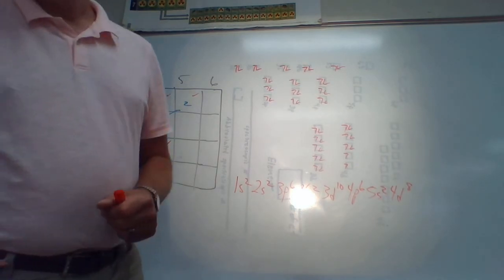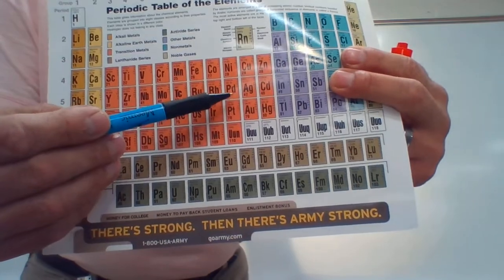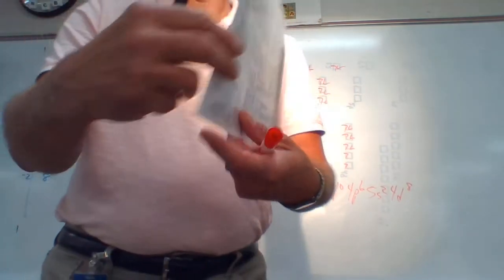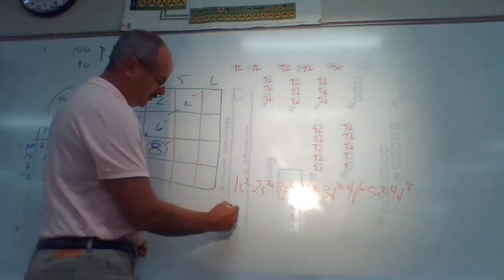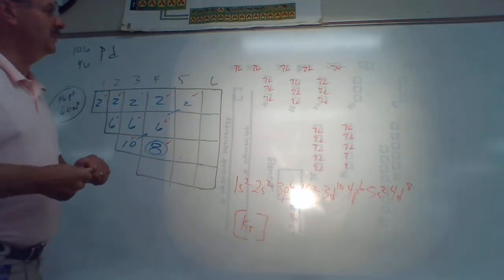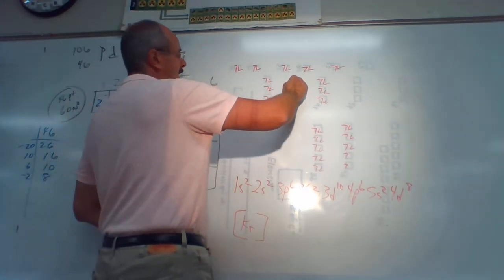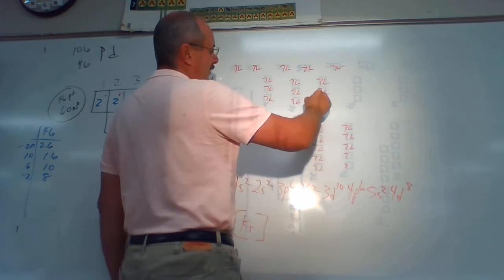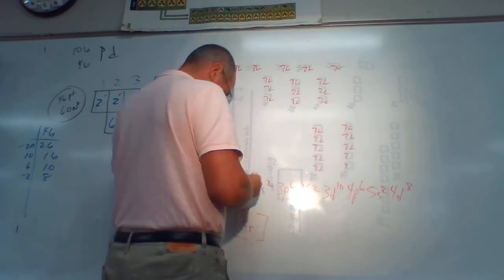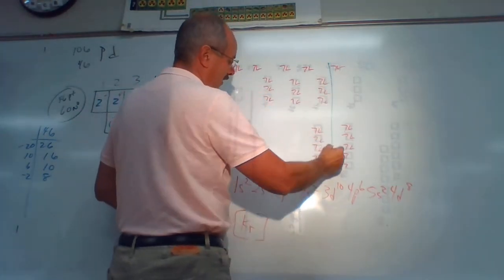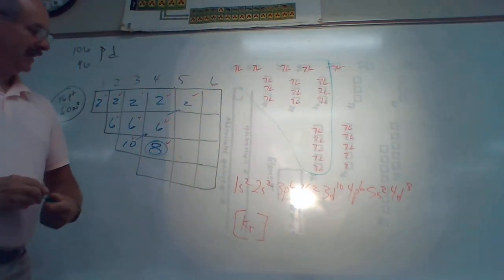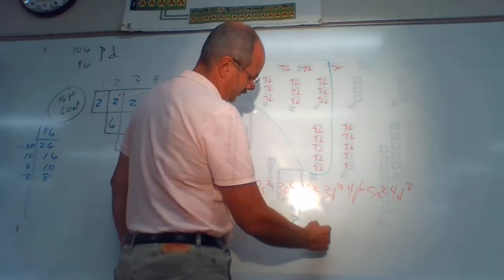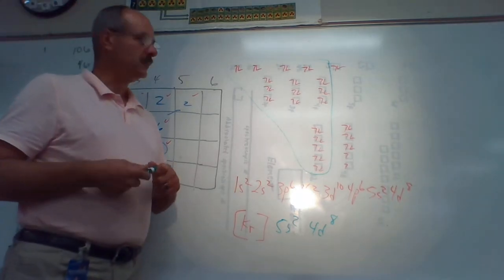The next piece is the abbreviated notation. For palladium, we go all the way across and up — krypton is the noble gas that is less than palladium, and krypton has 36 electrons. So I put [Kr] in parentheses. Counting over 36 electrons brings us to that line. Everything circled in green is krypton — that's 36 electrons — then I add 5s2 and 4d8 to get up to palladium.